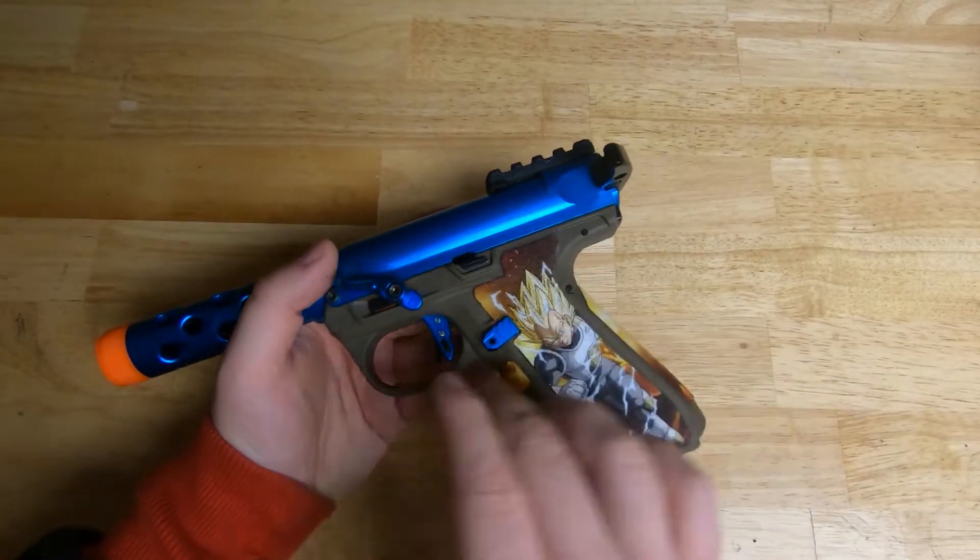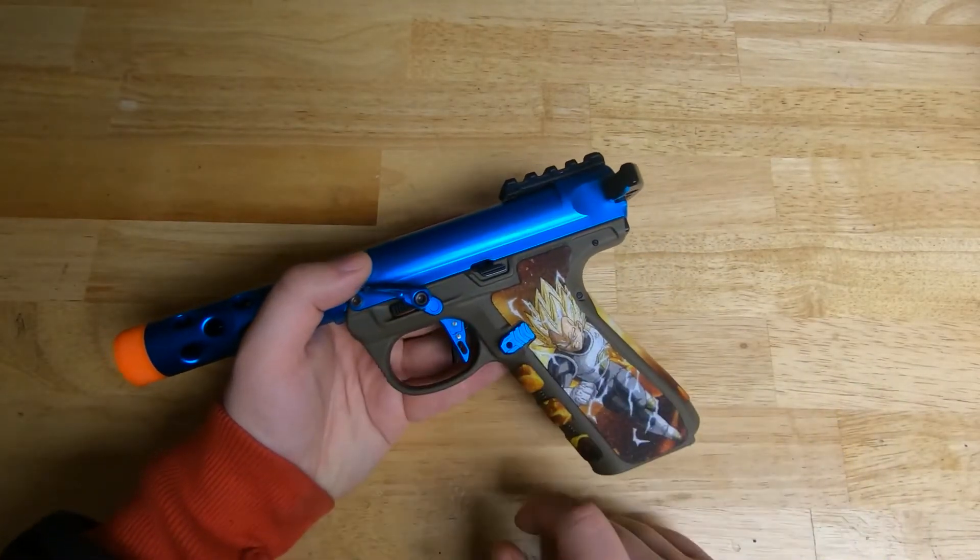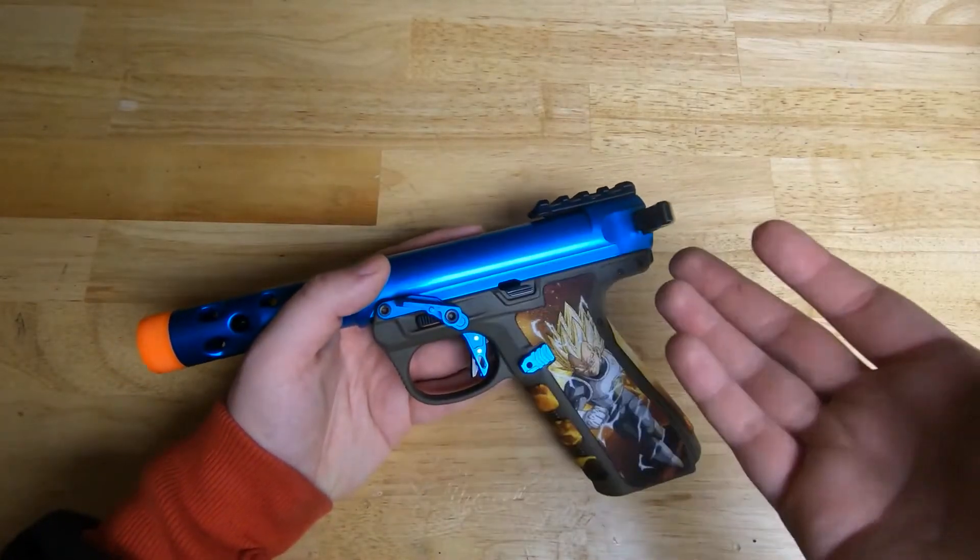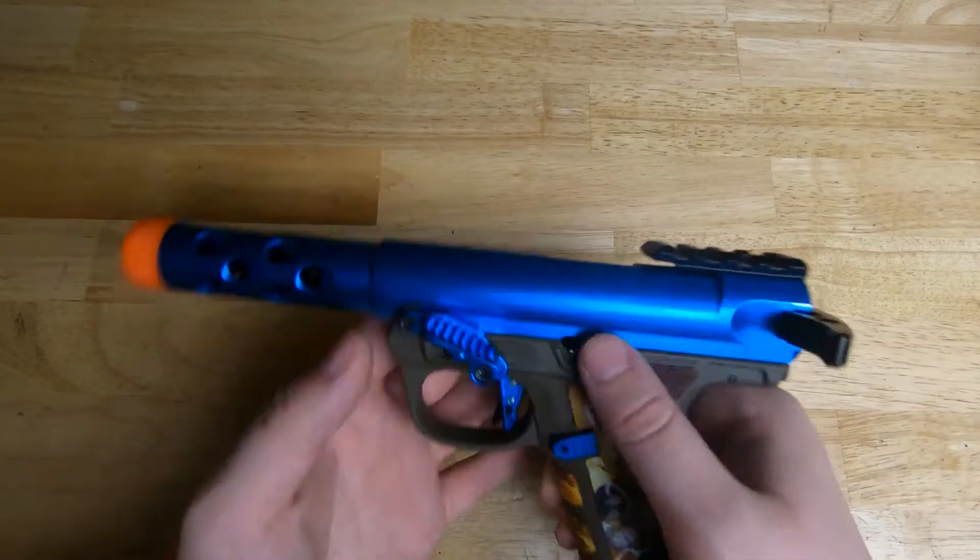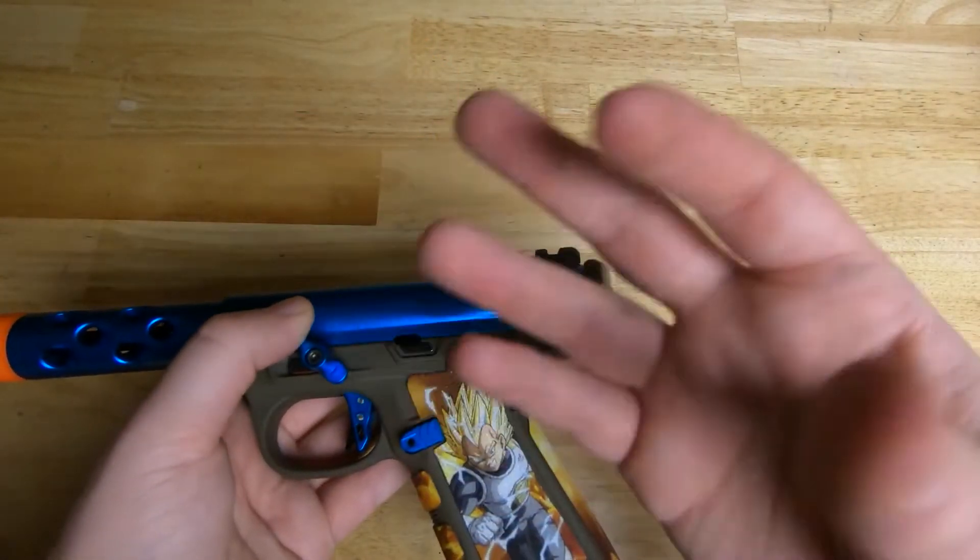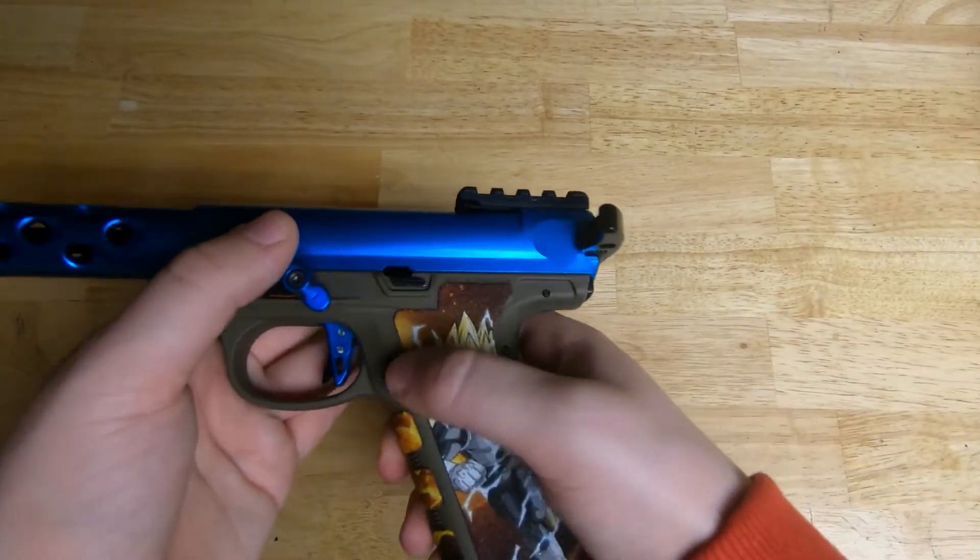All right, so today we're going to go over how to make your AAP-01 left-handed. It's already set up to be fairly left-hand friendly. Your slide catch is on both sides, but the thing that's going to be out of the box that's right-handed is your mag release.